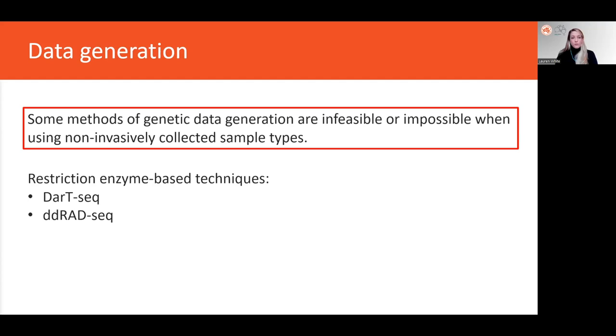So for example, restriction enzyme-based techniques such as DART-seq or DD-RAD-seq. These are very popular methods in conservation genomics today. They involve using a particular type of enzyme to fragment DNA molecules and attach adapters which allow the same subsection of the genome to be sequenced across individuals. They require a reasonable amount of DNA, but that fragmentation step by the enzyme also requires DNA to be in long molecules, which is why they are difficult or impossible to apply to non-invasively collected sample types.